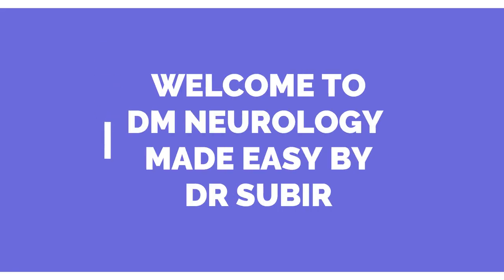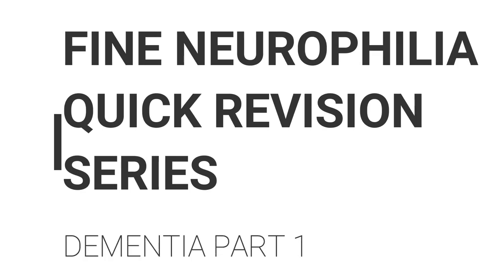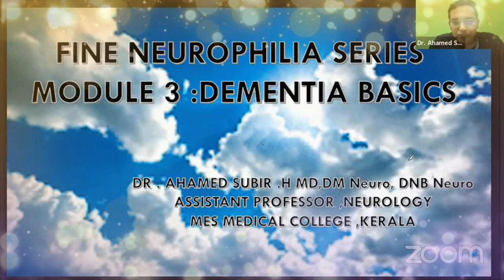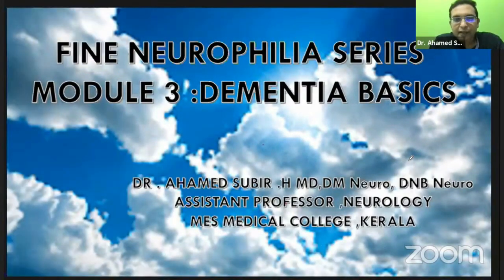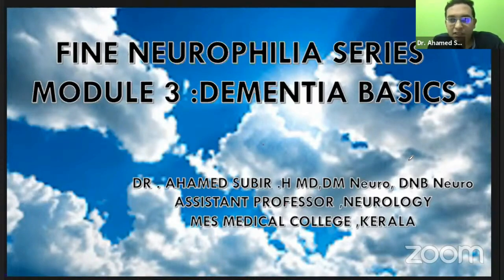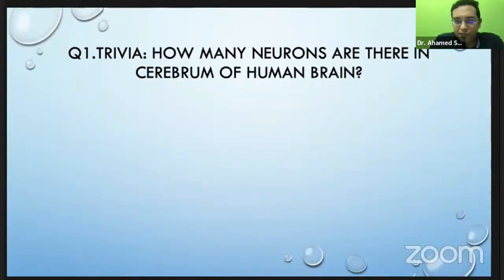Welcome to DM Neurology Made Easy. Today is the sixth episode of the Fine Neurophiliac Pick Revision Series. Let's see Dementia Part 1. What I am planning to do is to make you read Harrison and Bradley as far as possible and also clear some concepts in dementia so that it's easy for you to read and understand it in a better way. So let's start this dementia module.